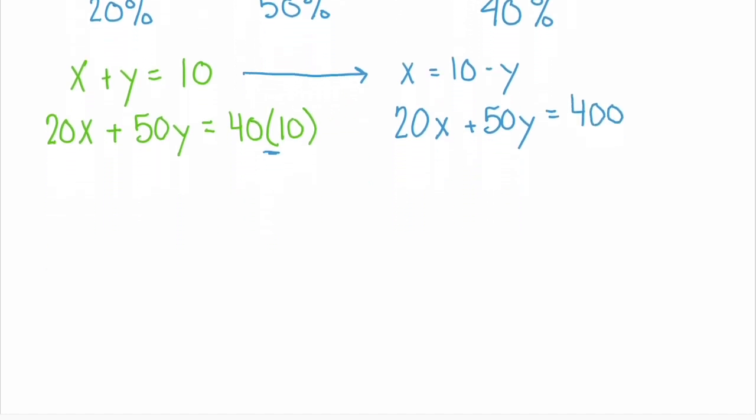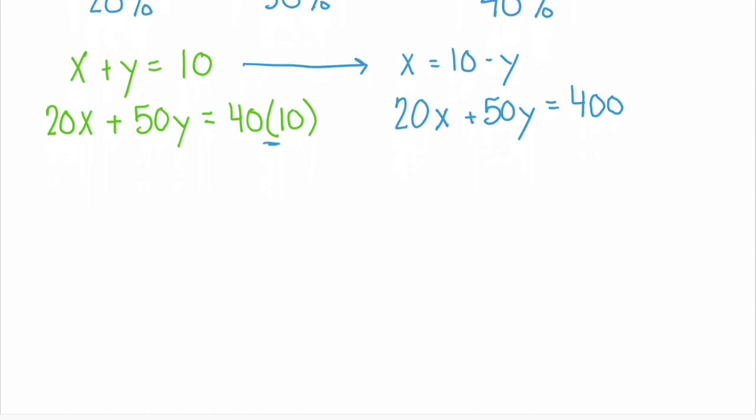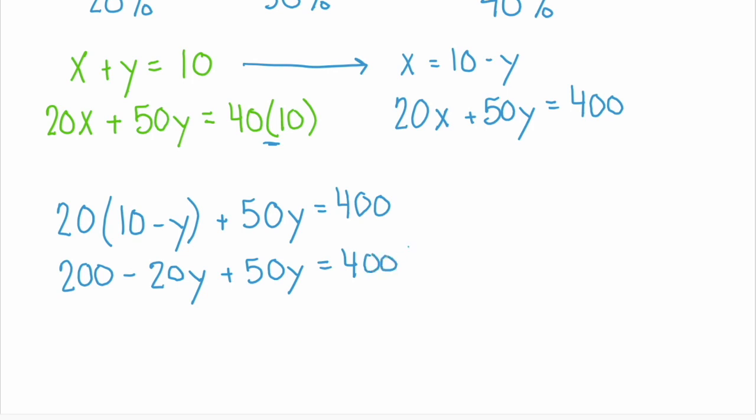So we're going to substitute our first equation, x equals 10 minus y, into that second equation. So we have 20 times x, which is now 10 minus y, plus 50 times y equals 400. Distribute that 20 to get 200 minus 20y plus 50y equals 400. Combine the like terms, those y's on the left, and we have 200 plus 30y equals 400.